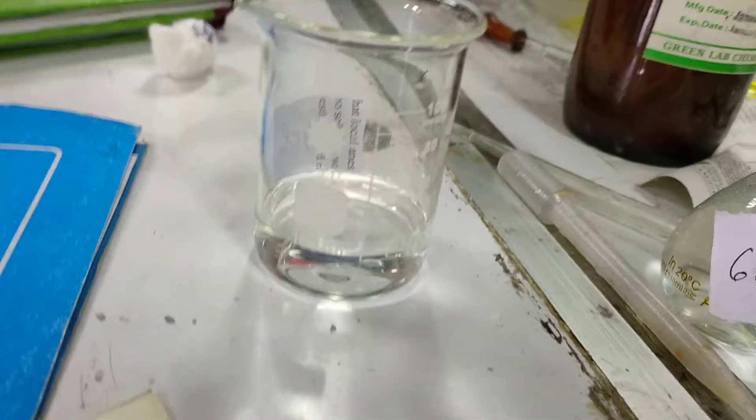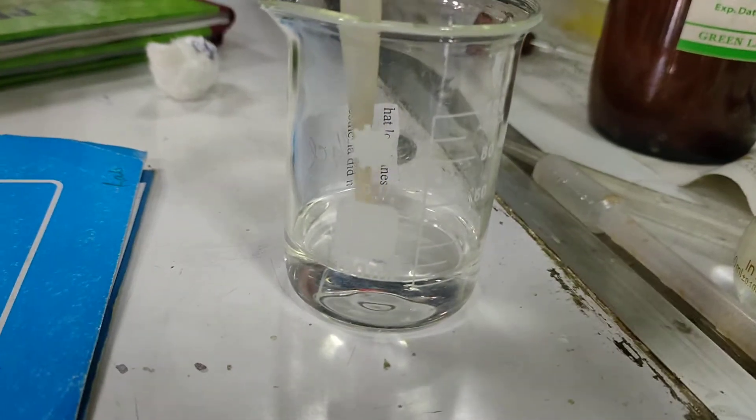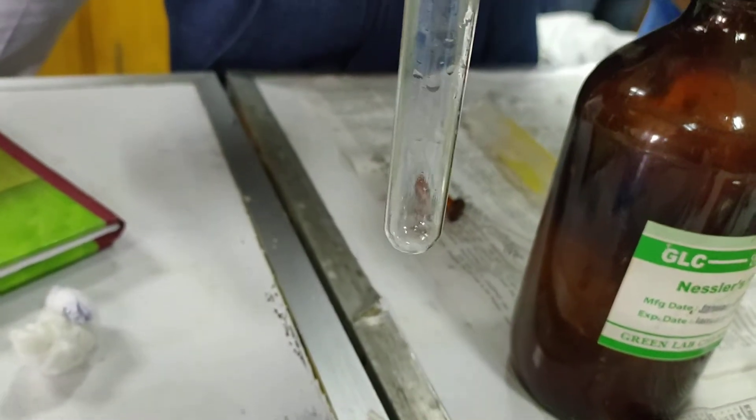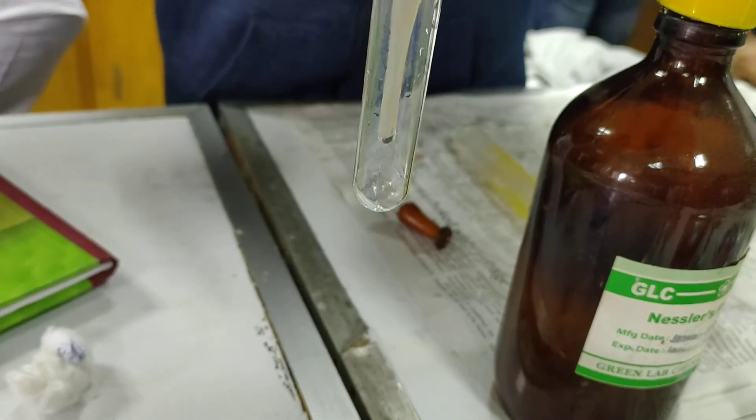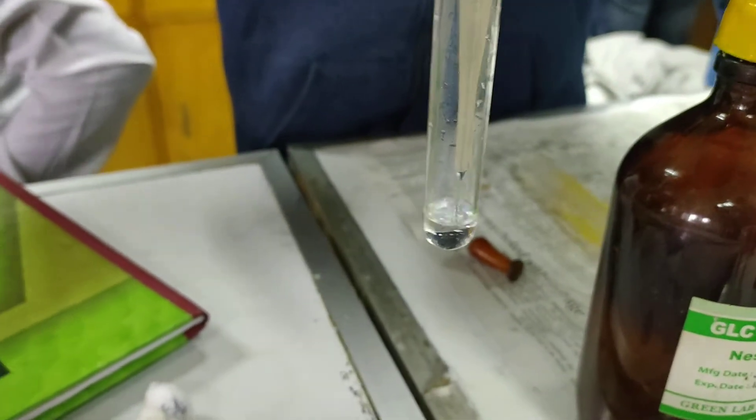We are going to test for the ammonium cation, this is a group 5 cation. At first, sample solution is being taken in the test tube.